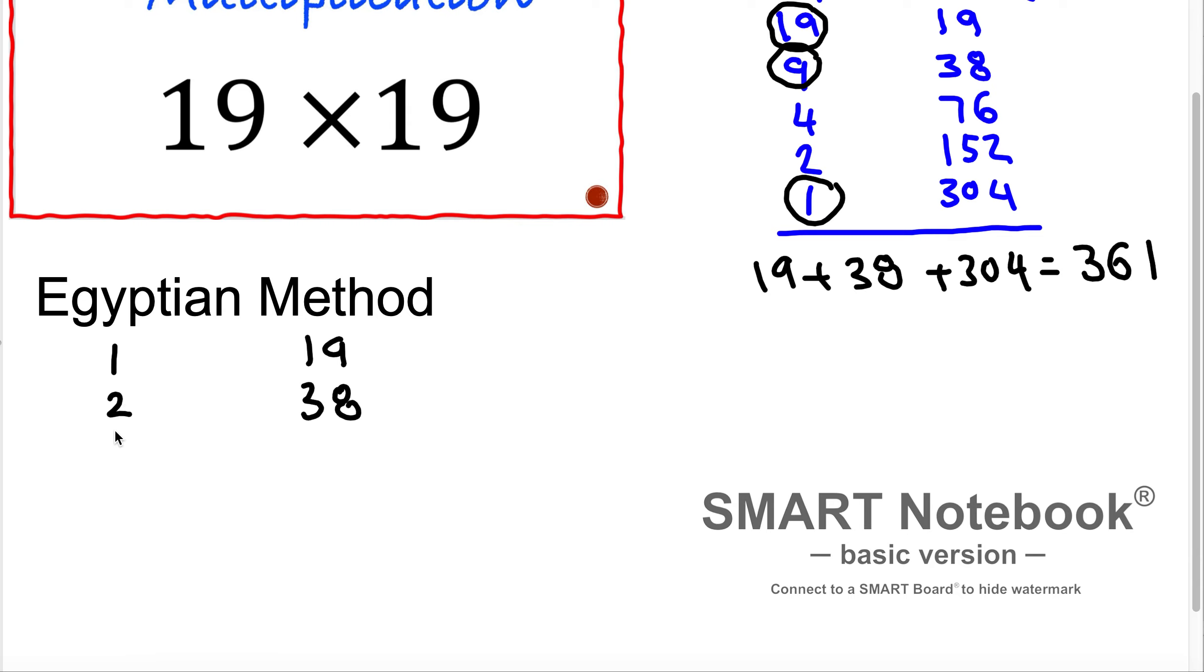If we are doubling 2 it's going to equal 4. If we are doubling 38 it's going to be 76. If we are doubling 4 it's going to be 8. But if we are doubling 76 it's going to equal 152.